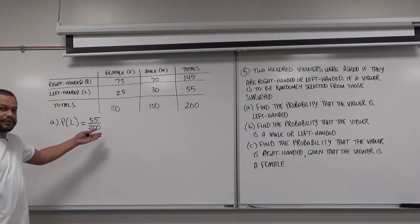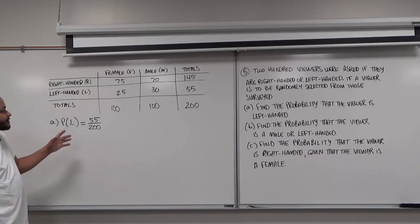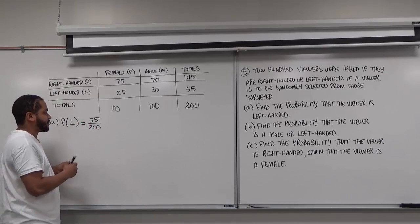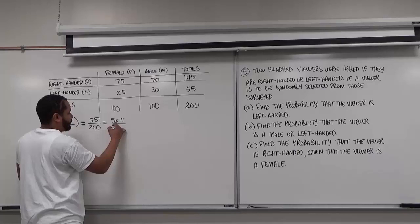The next step is to reduce our fraction. We have 55 and 200. The common factor for both of them is 5. So we have 5 times 11 on top and 5 times 40 on the bottom. The 5s cancel, and we're left with 11 over 40.